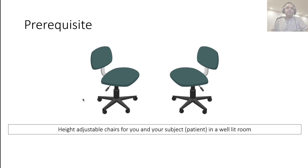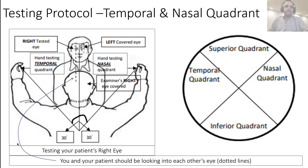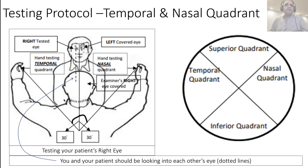For this test you need two chairs that can move up and down independently so you can be at eye level with your patient, and at a specific distance from them. This is taken directly from your clerkship manual. When testing visual fields, you need to be at the eye level of your patient.